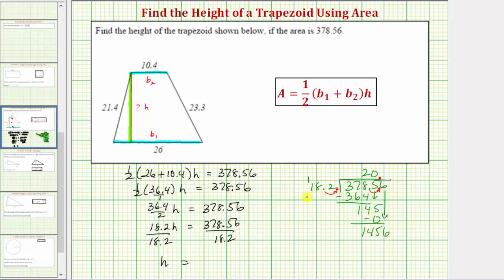Now we need to determine how many 182s are in 1456, and I believe that's eight. Multiplying, eight times two is 16, perform an exchange. Eight times eight is 64, plus one is 65. Perform an exchange with the six. Eight times one is eight, plus six is 14. Notice how the difference is zero, and therefore the quotient is 20.8.